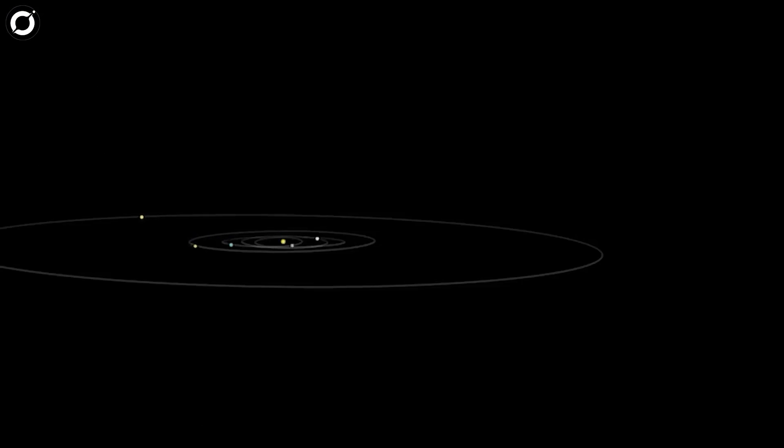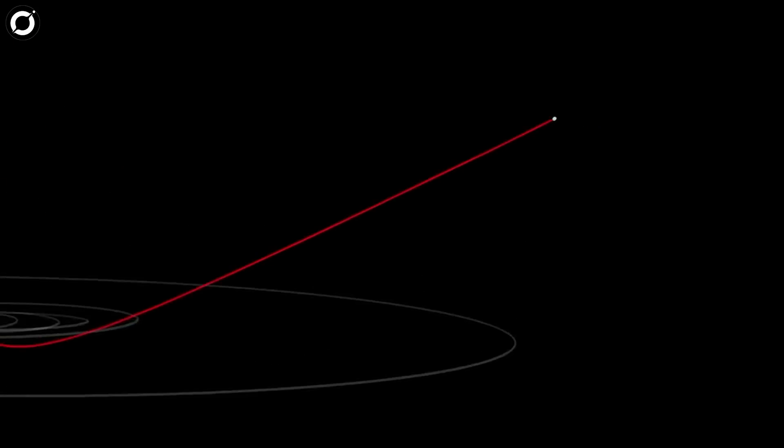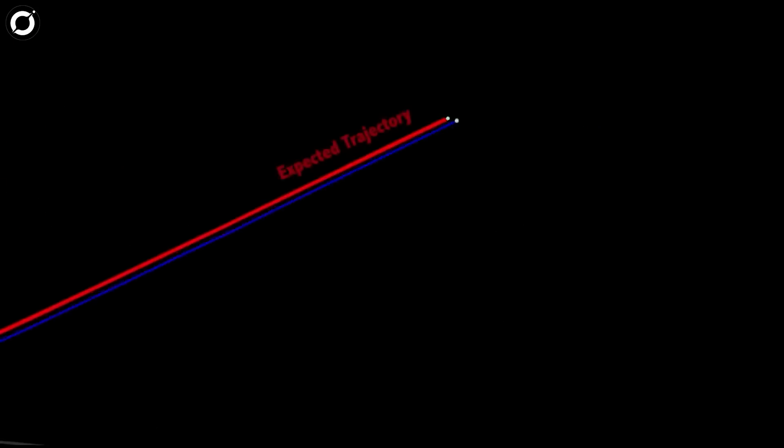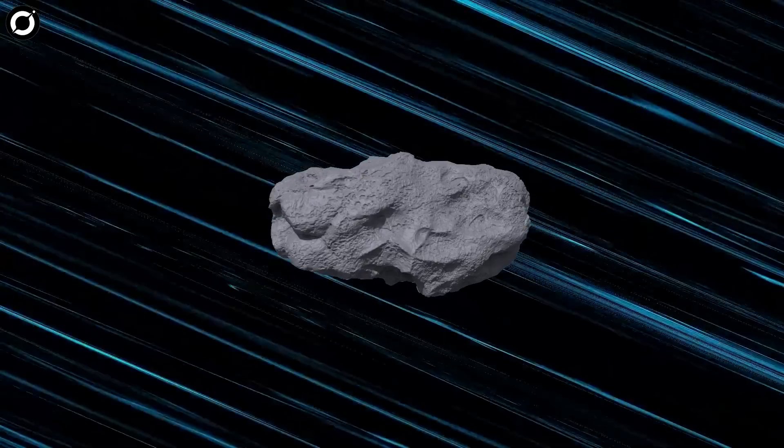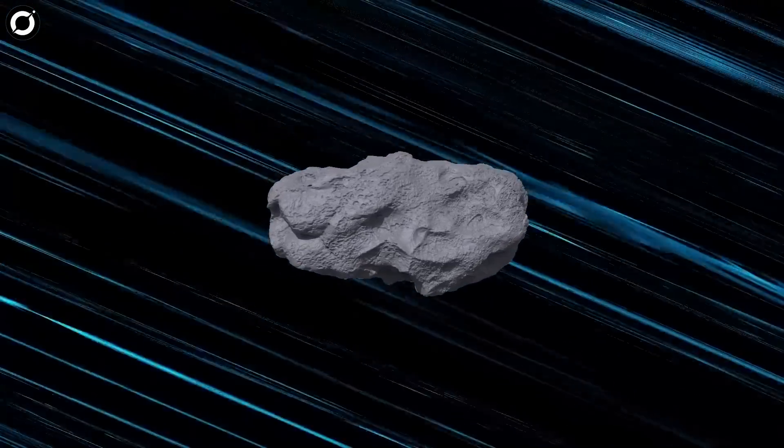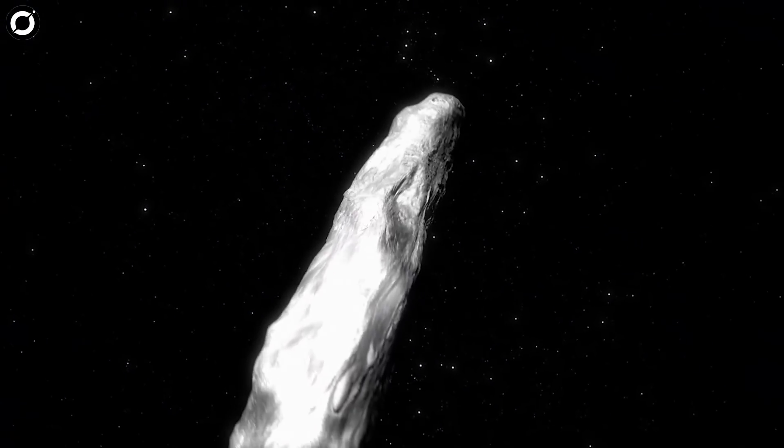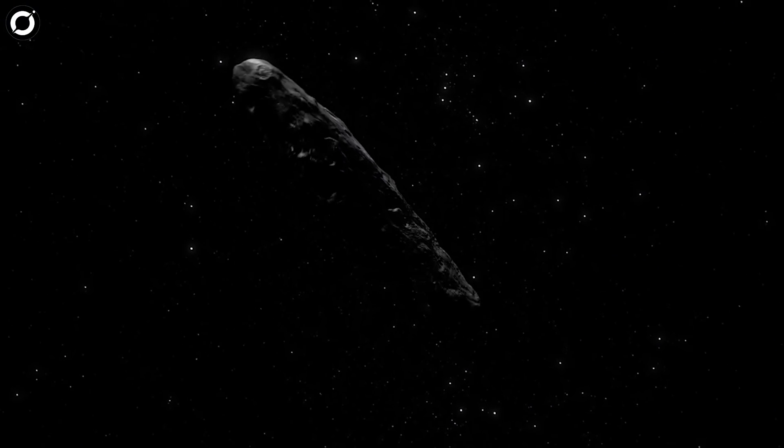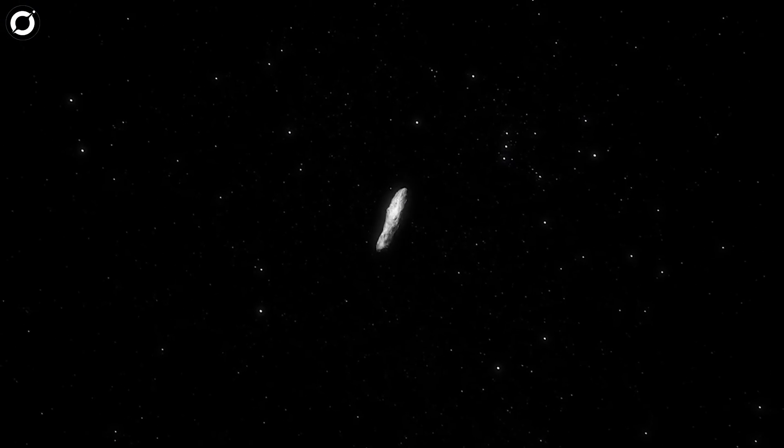Oumuamua was traveling through our solar system at a blistering speed of 87.3 kilometers per second. At Earth's distance from the Sun, any object moving faster than about 42 kilometers per second is in an unbounded hyperbolic orbit relative to our star, meaning that it is too speedy to be captured by the Sun's gravity. Anything traveling faster than this local celestial speed limit may come from, and if unobstructed, should return to interstellar space.